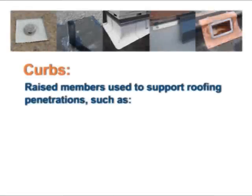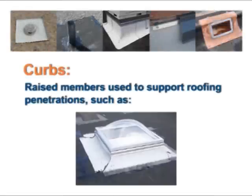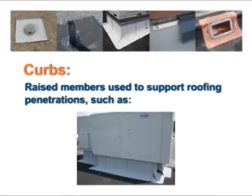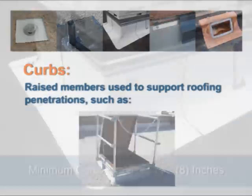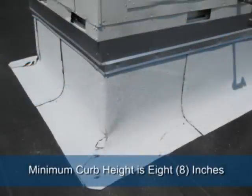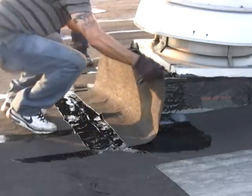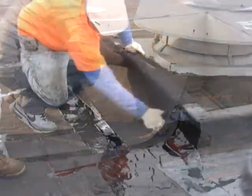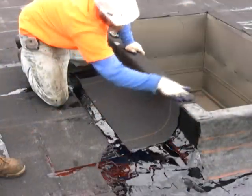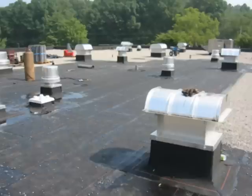Curbs are raised members used to support roofing penetrations such as skylights, mechanical equipment, and hatches above the roofing surface. Minimum curb height is 8 inches. In the following section you will see both an equipment and roof hatch as examples of a curb.